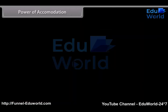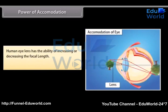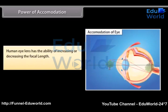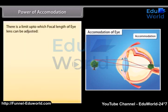Power of accommodation. The human eye lens has the ability of increasing or decreasing its focal length. This is known as accommodation. Accommodation is achieved with the help of ciliary muscles. There is a limit up to which the focal length of the eye lens can be adjusted.